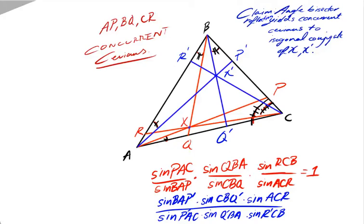Now, this is a quick presentation on the fact that if you have a set of concurrent cevians AP, BQ, and CR that concur at a point X, and you reflect each cevian across the corresponding angle bisectors, then you obtain new cevians AP', BQ', CR' that concur at a new point X' called the isogonal conjugate of X.